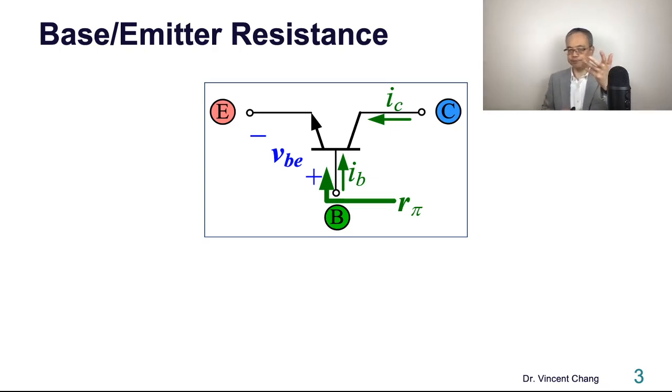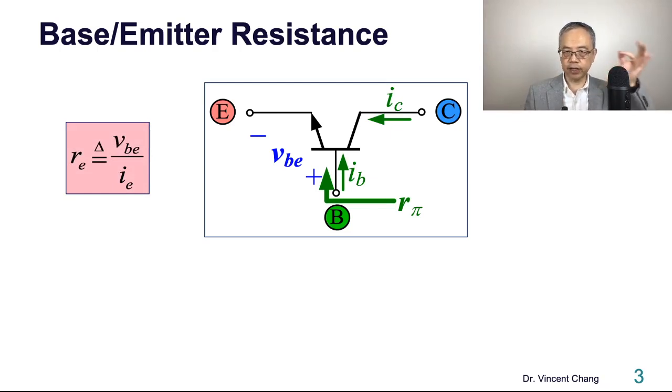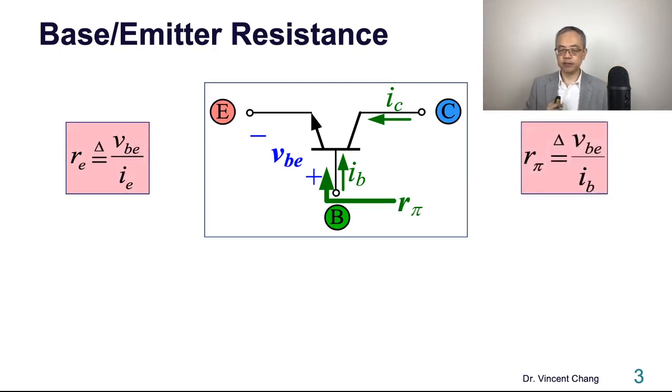In the previous lecture, we talked about the two important resistances. The first one is looking into the base. The second one is looking into the emitter. Every time when you deal with the resistance between two terminals doing the small signal equivalent circuit analysis, you've got to ask: am I looking into emitter or looking into base? This is very important.